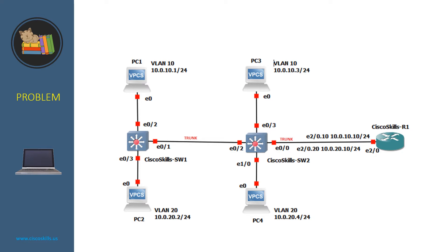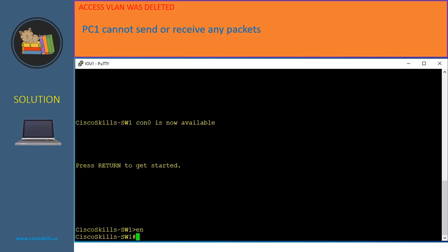Now let's get right into the first problem. In the first problem, PC1 cannot send or receive any packets. From the network diagram, we know that PC1 is connected to Switch 1 via port E0/2, and port E0/2 must belong to VLAN 10.